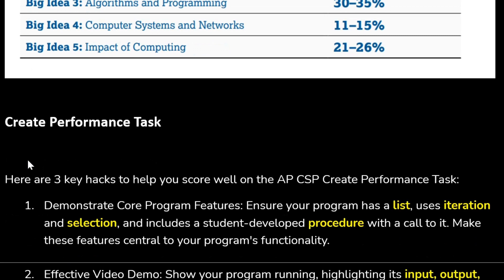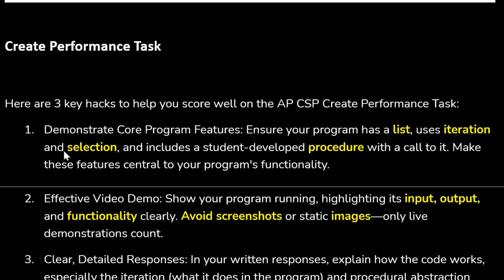For Create Performance Task, there are three hacks. The first hack is basically demonstrate core program features. In the marking scheme, it has mentioned what all things you need to use. First thing you need to use is a list. List is a collection which stores multiple values. You need to use some iteration like a loop, and you need to use selection like if-else. You need to use list, iteration, selection, and also you should make a function or procedure to call it. So basically you need to use all these concepts in your project which you are making for AP Computer Science Principles.